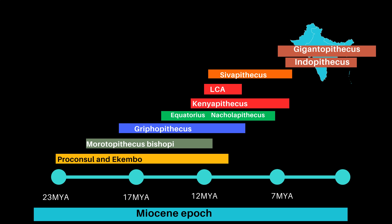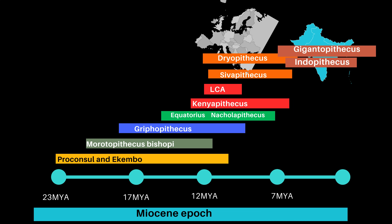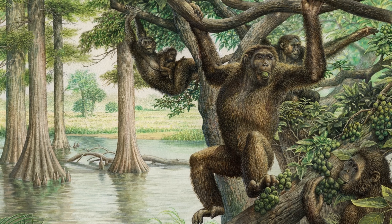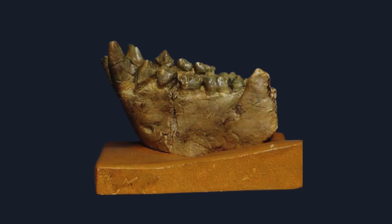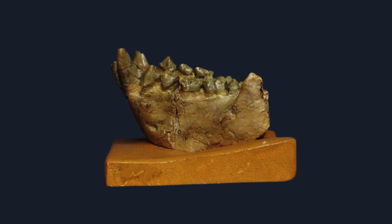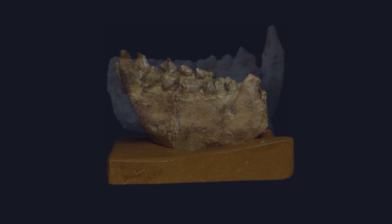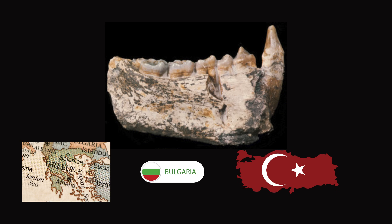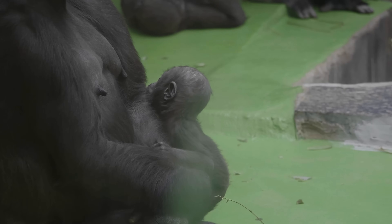During the time pongines were evolving in Asia, Dryopithecus lived around 12.5 to 11.9 million years ago in France, Spain, and Austria. Fossils found in Catalonia had a body form like modern apes and were skilled climbers, possibly partly suspensory like living apes. These early hominines had jaws and teeth similar to chimpanzees, adapted for a diet of soft fruits.